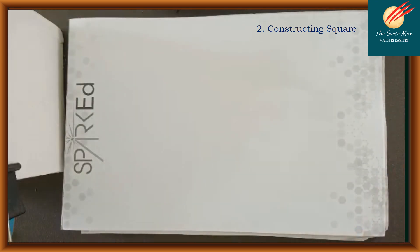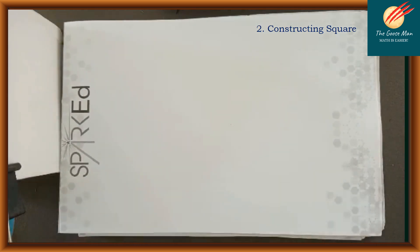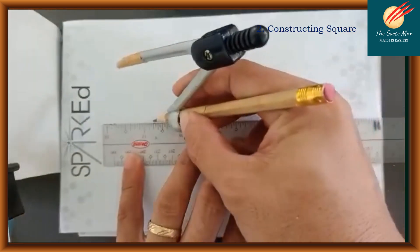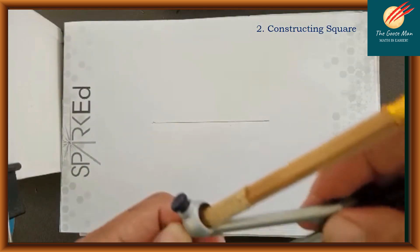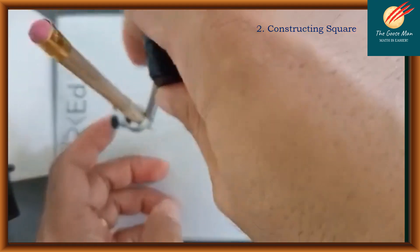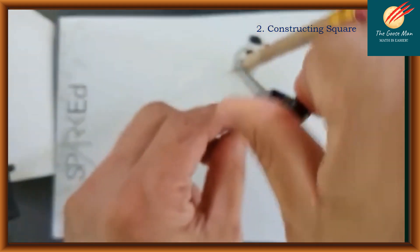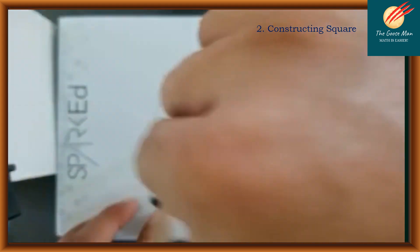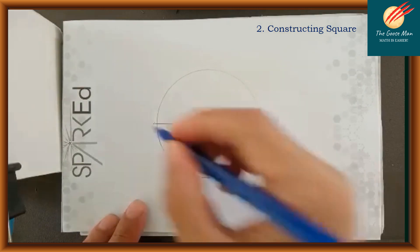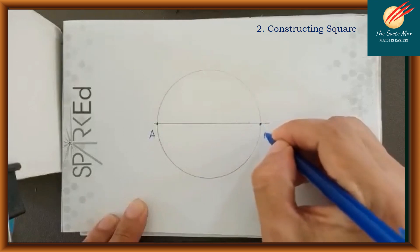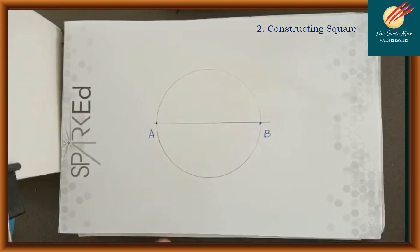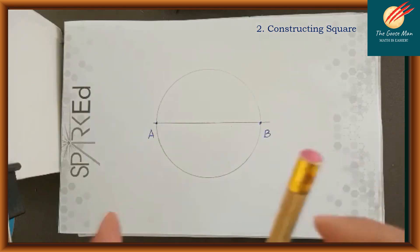For our next construction, we will construct a square. The first thing we will do is draw a line segment. From our line, we will use our compass and draw a circle. Let's call the endpoints of the line segment point A and point B. Next, we will construct a perpendicular bisector of line segment AB.